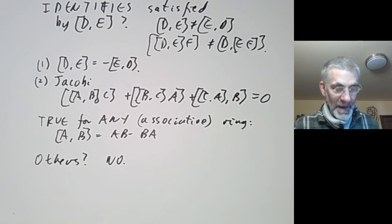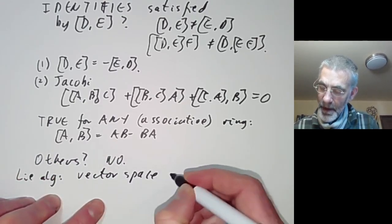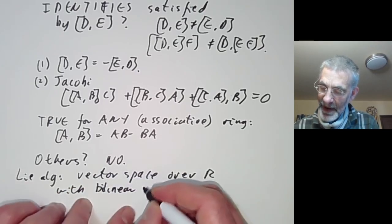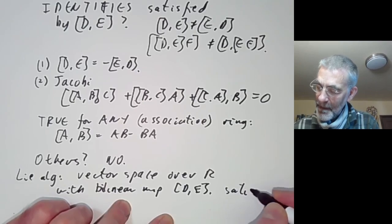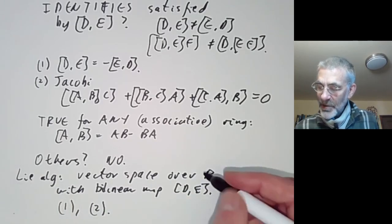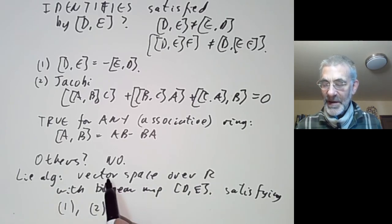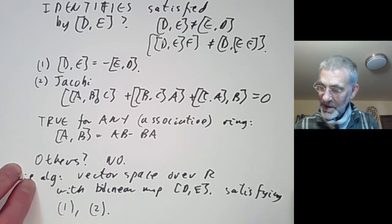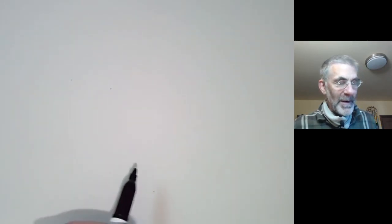So a Lie algebra is a vector space over the reals with a bilinear map taking D and E to a bracket [D, E], satisfying conditions one and two — antisymmetry and the Jacobi identity. In general there's no reason it must be a vector space over the reals; you could take it to be a module over some commutative ring, but in this course we'll work over the reals or sometimes the complex numbers.